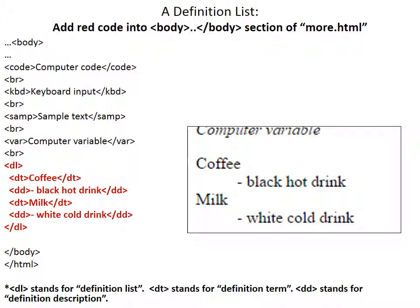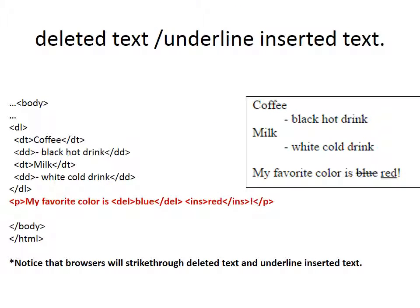DL stands for definition list. DT stands for definition term, and DD stands for definition description. DEL is for deleted text that browsers will strike through, and INS is for inserted text with underline.